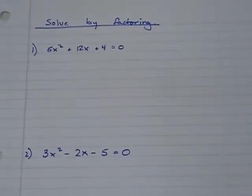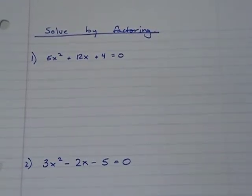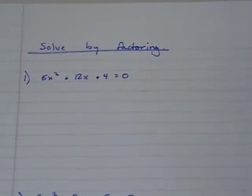Today we've been asked to solve two equations by factoring. The first equation, 5x squared plus 12x plus 4 equals 0.